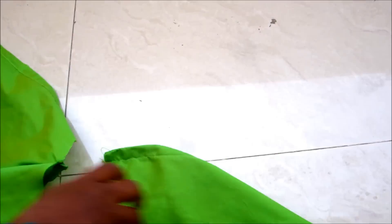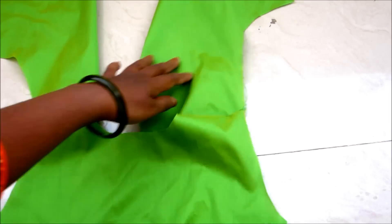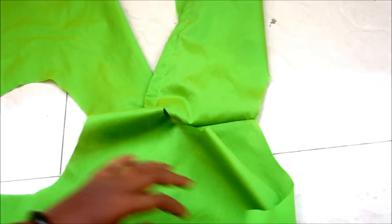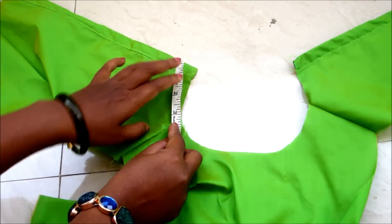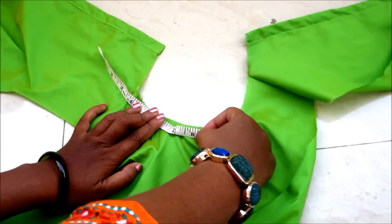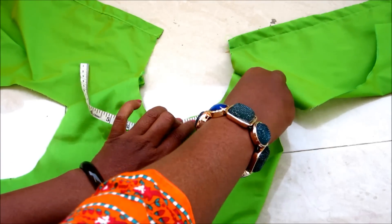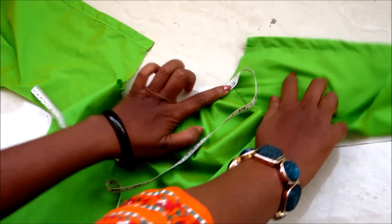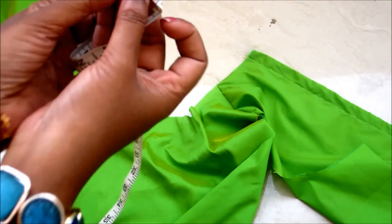After joining the shoulder line it would look like this. Now run the tape all around the necklines from the center back towards the center front against center back. Measure the length of full neckline. It is of 16 inches.